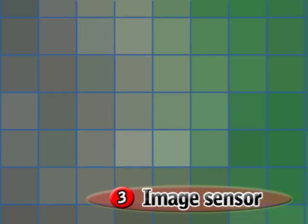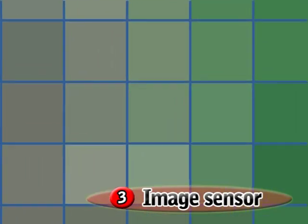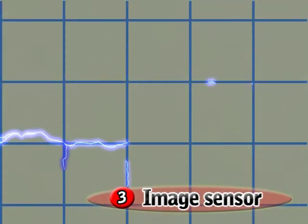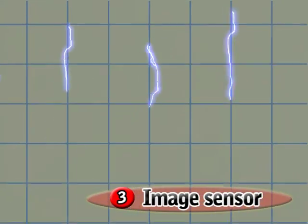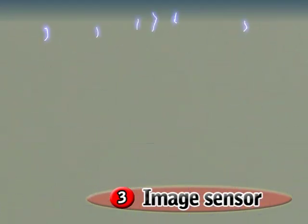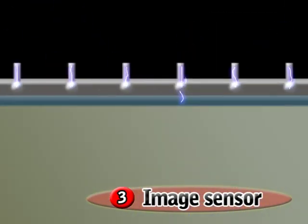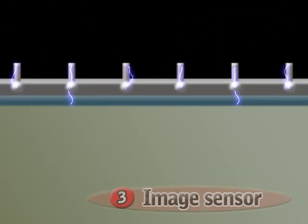Third, an image sensor is a silicon chip that, like film in older cameras, is exposed to an image and precisely records that image so it can be converted into a digital file for storage on a memory card.